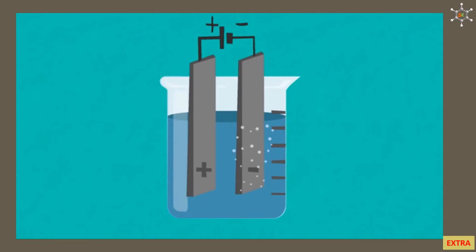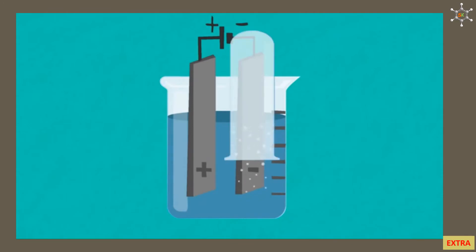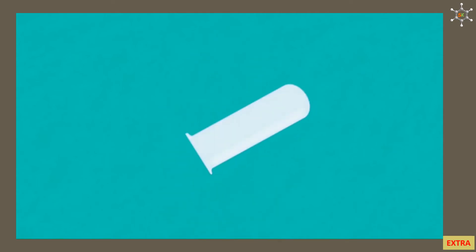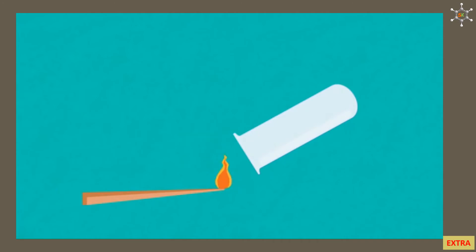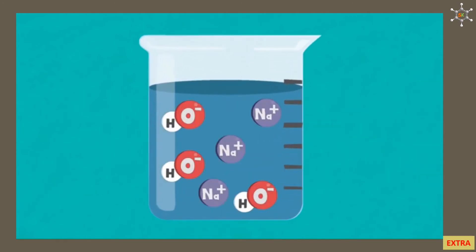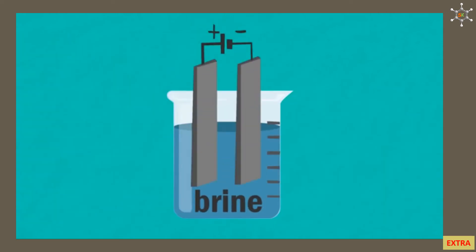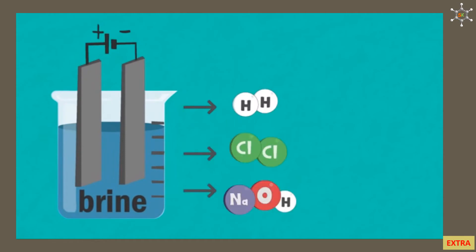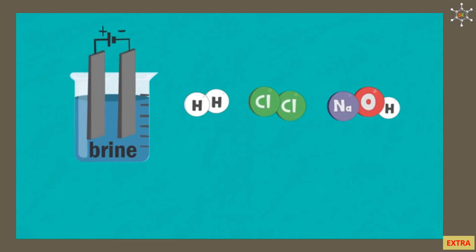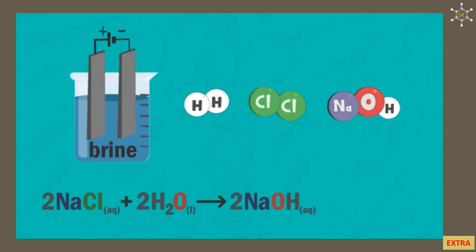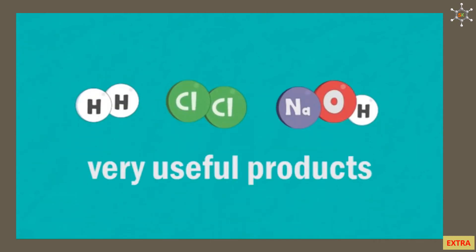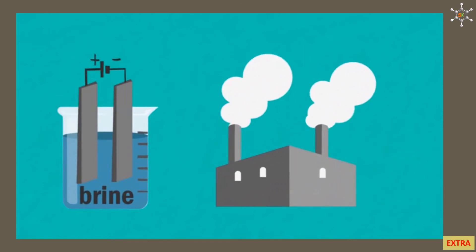The hydrogen gas is colorless and can be collected in a test tube. It is identified by a burning wooden splint, which produces a familiar 'pop' as the hydrogen burns. The sodium ions and hydroxide ions remaining in solution combine to form sodium hydroxide. Overall, electrolysis of brine produces hydrogen, chlorine, and sodium hydroxide: concentrated NaCl solution + water → NaOH solution + H2 gas + Cl2 gas.